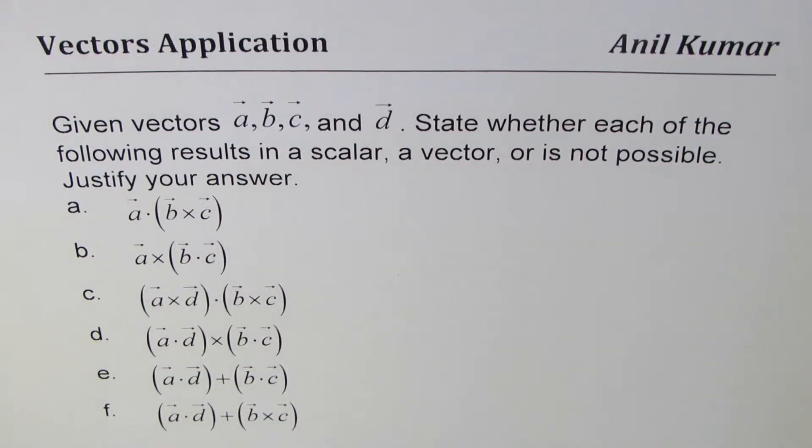I'm Anil Kumar, we'll explore dot and cross product in this video. The question here is: given vectors a, b, c, and d, state whether each of the following results in a scalar, a vector, or is not possible.